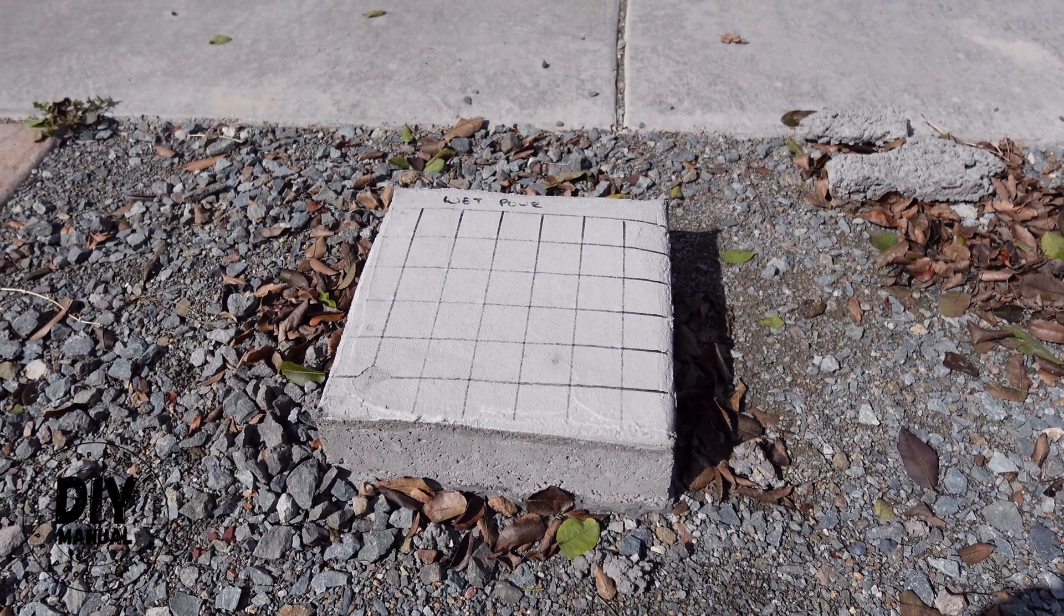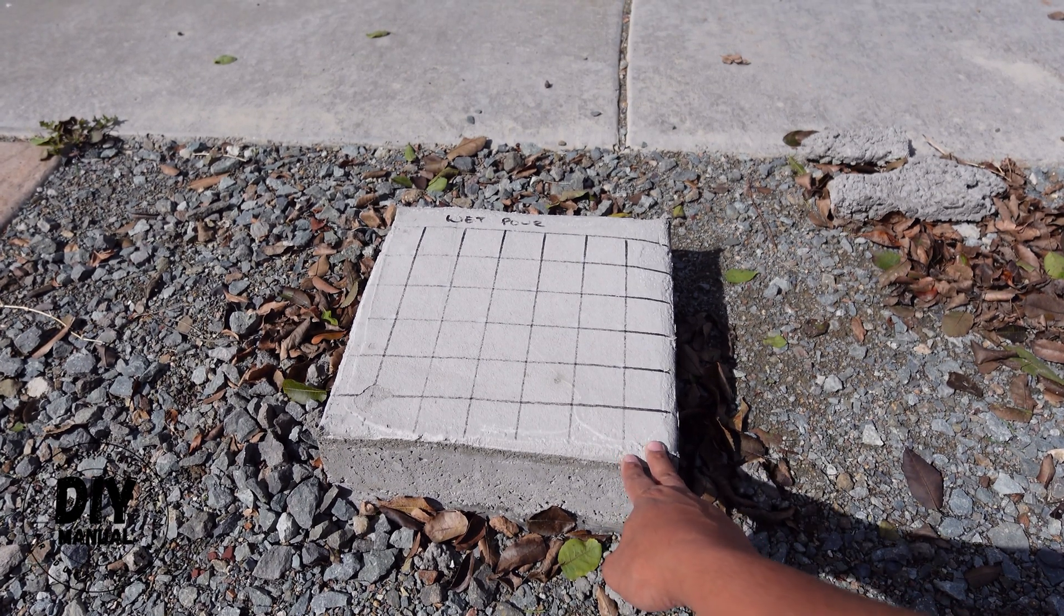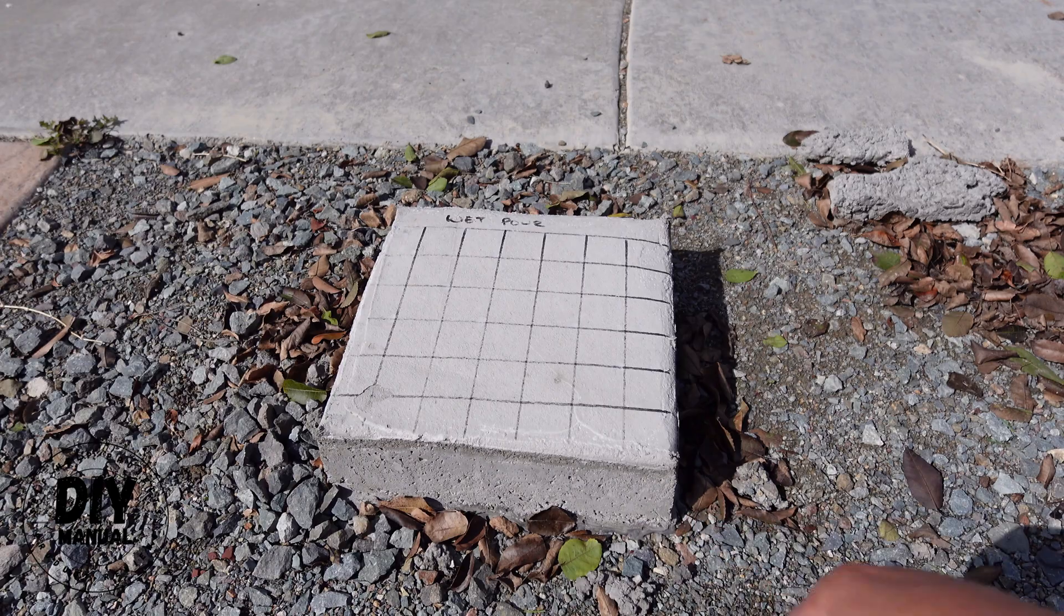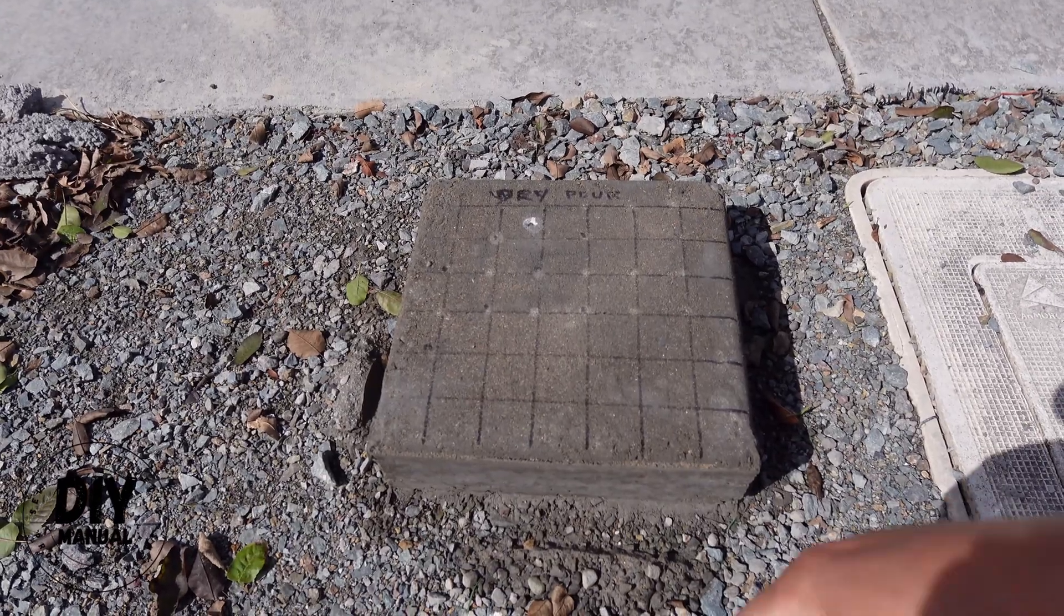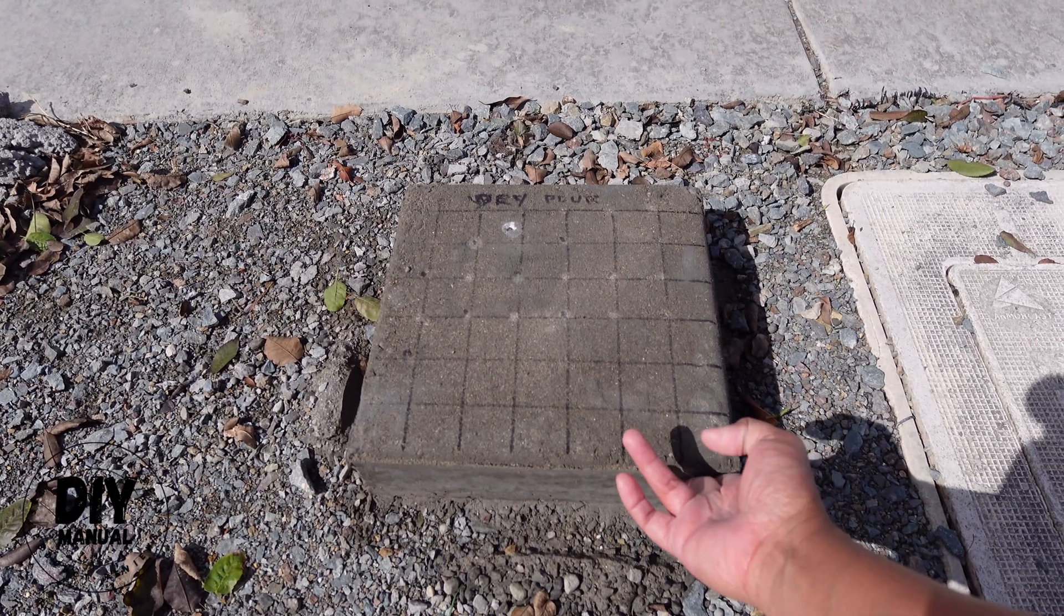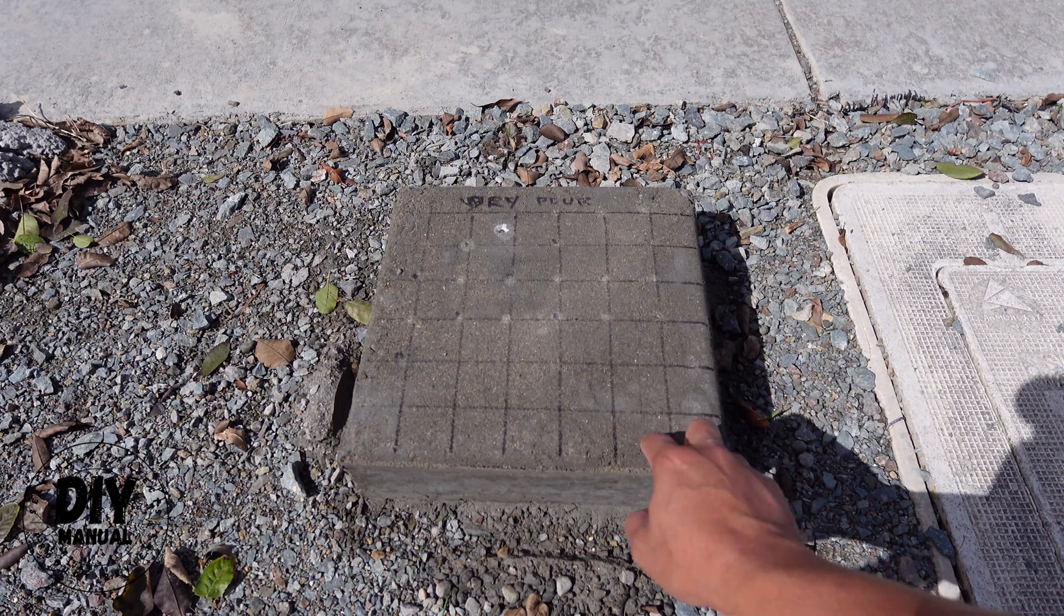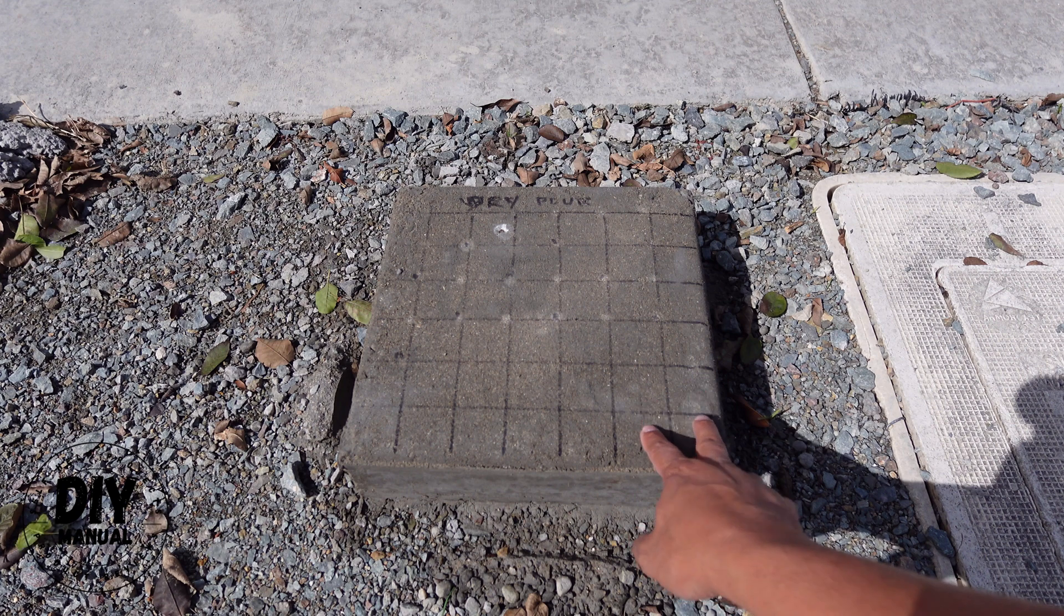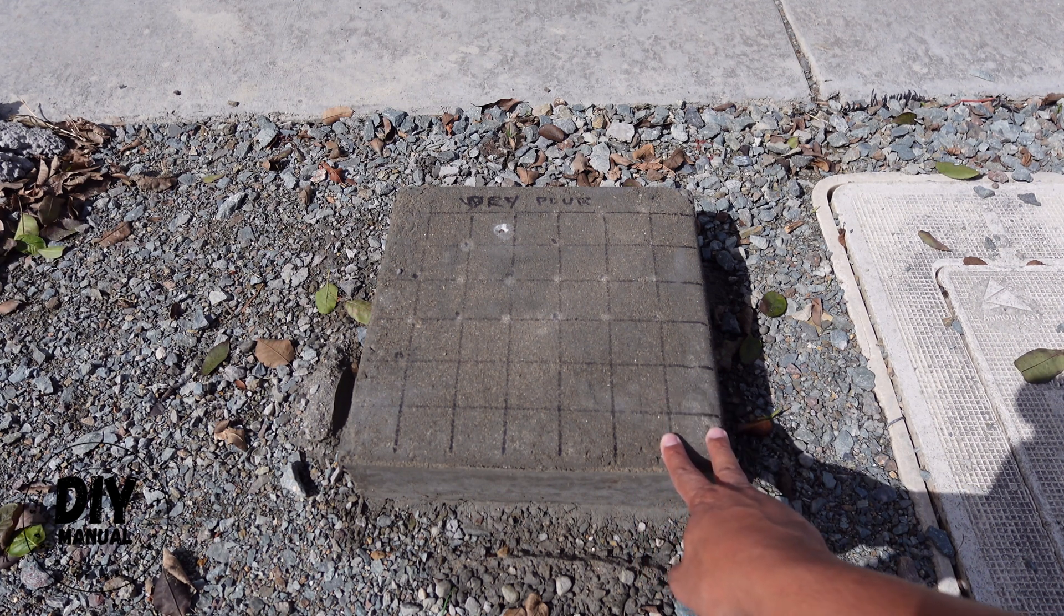This is the wet pour concrete. It's been rained on also the last two nights. And you can see right now, it's basically dry already after it got some sunlight today. But if you look here, this is the dry pour concrete. And even after it got the same amount of sunlight today, it looks like it's still drying.